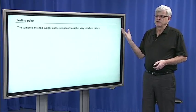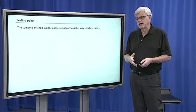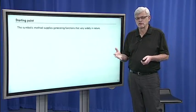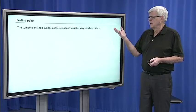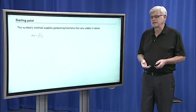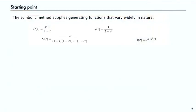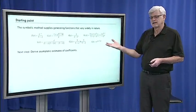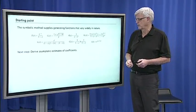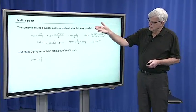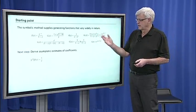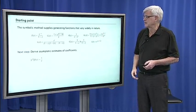Our starting point is that with the symbolic method, we saw that we had tools — combinatorial constructions and transfer theorems — that give us generating functions that vary widely in nature. That's the generating function for derangements, that's for involutions, that's for surjections, and so forth. These functions are all quite different in character. But still, our goal is to get asymptotic estimates of the coefficients out — for example, that the probability a permutation is a derangement is about one over e.